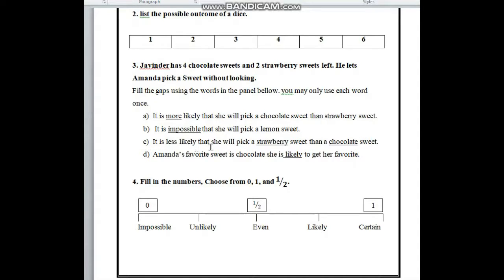It is blank likely that she will pick a blank sweet than a blank sweet. It is less likely that she will pick a strawberry sweet because there are 2 strawberry sweets and 4 chocolate sweets. So it is less likely she will pick a strawberry sweet than a chocolate sweet.